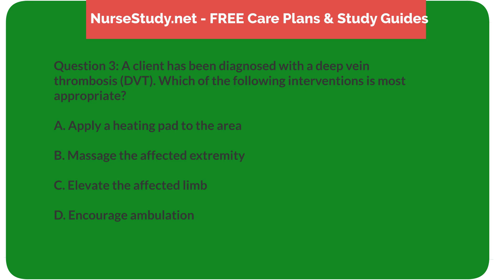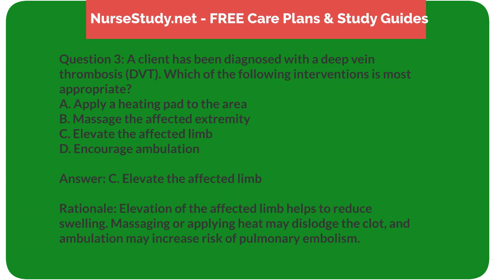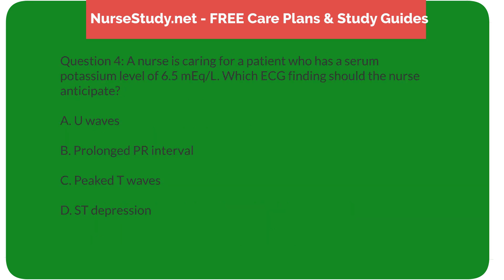Question 3: A client has been diagnosed with a deep vein thrombosis (DVT). Which of the following interventions is most appropriate? A) Apply a heating pad to the area, B) Massage the affected extremity, C) Elevate the affected limb, D) Encourage ambulation. Answer: C, Elevate the affected limb. Rationale: Elevation of the affected limb helps to reduce swelling. Massaging or applying heat may dislodge the clot, and ambulation may increase risk of pulmonary embolism.